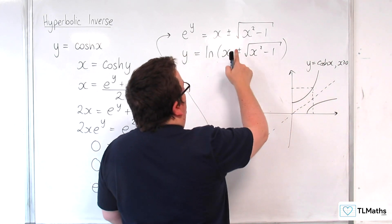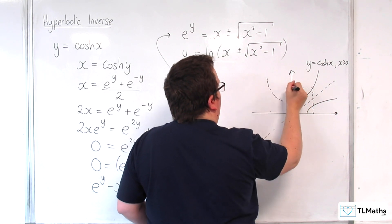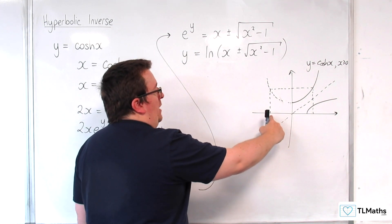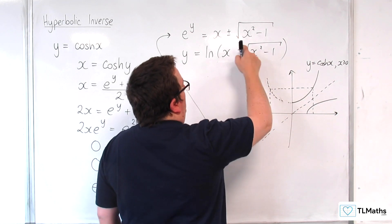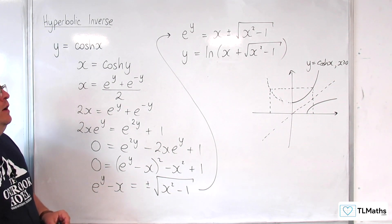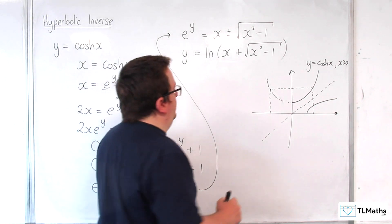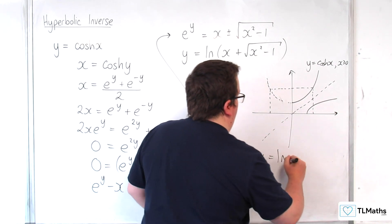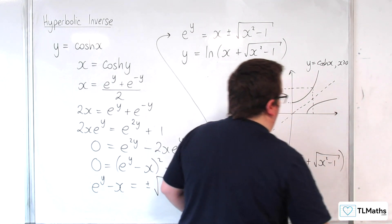So, we've got rid of that, and so we are just having plus here. So, it's y equals the natural log of x plus the square root of x squared take away 1. So, we can say that arcosh of x is equal to the natural log of x plus the square root of x squared take away 1.